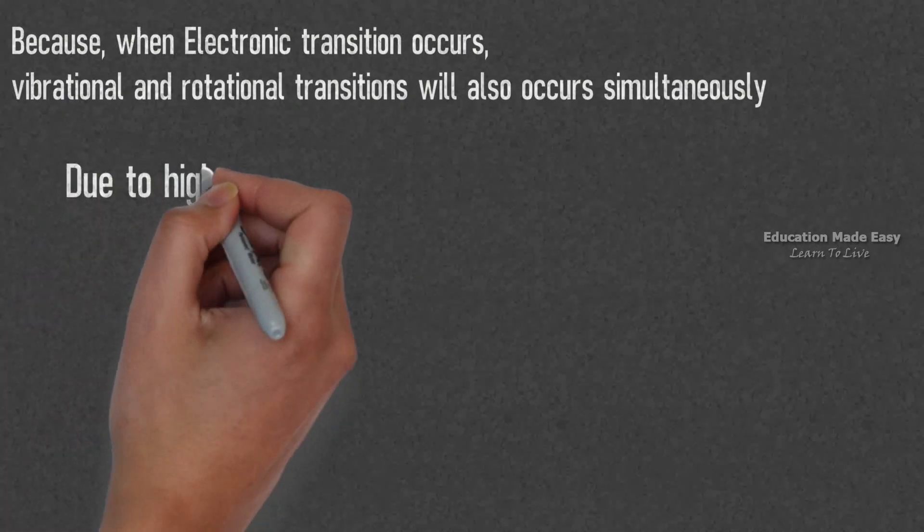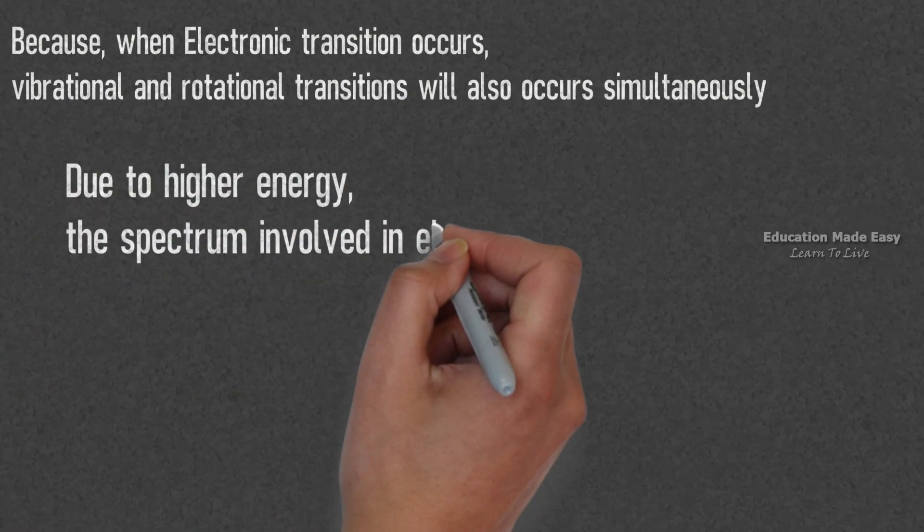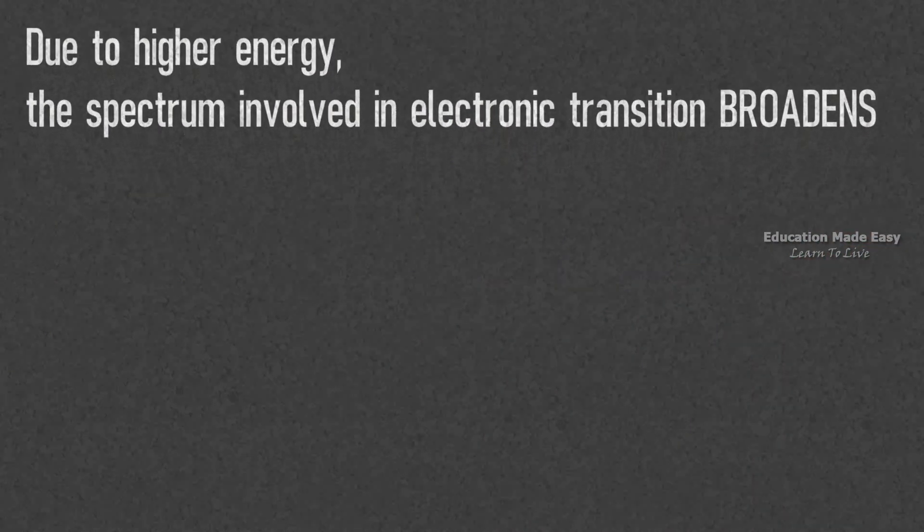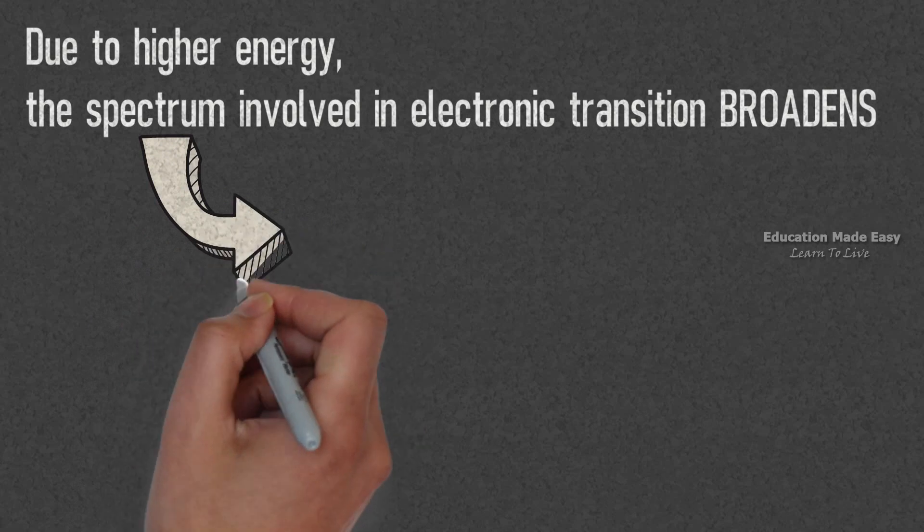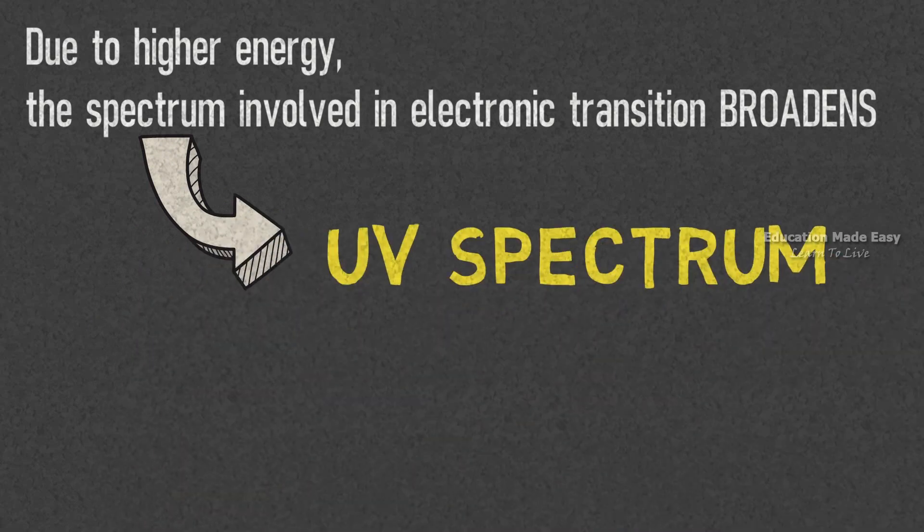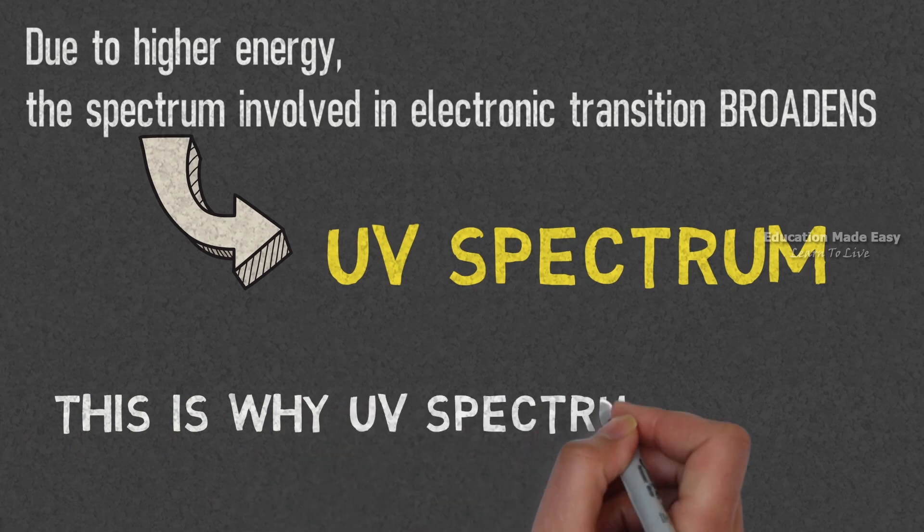Due to higher energy, the spectrum involved in electronic transition broadens. What is the spectrum involved in electronic transitions? It is the UV spectrum. This is why UV spectrum is broad.